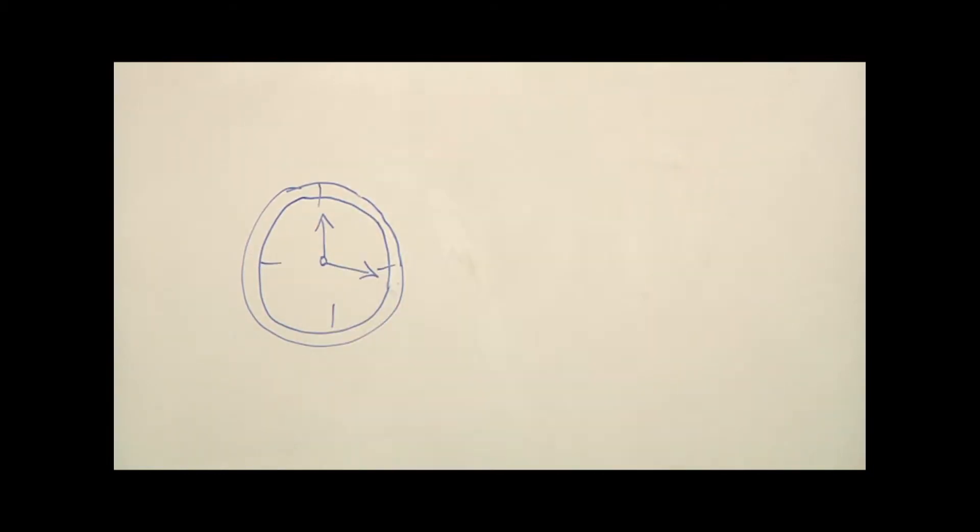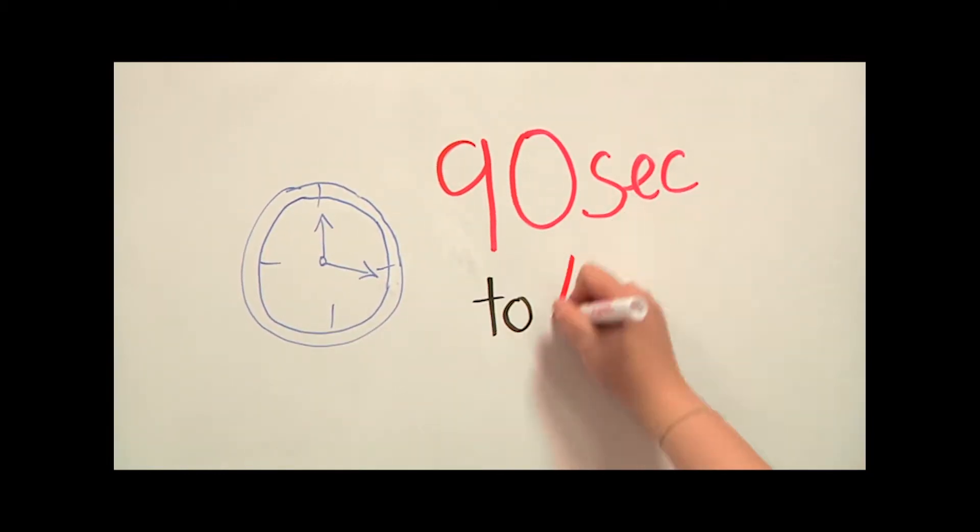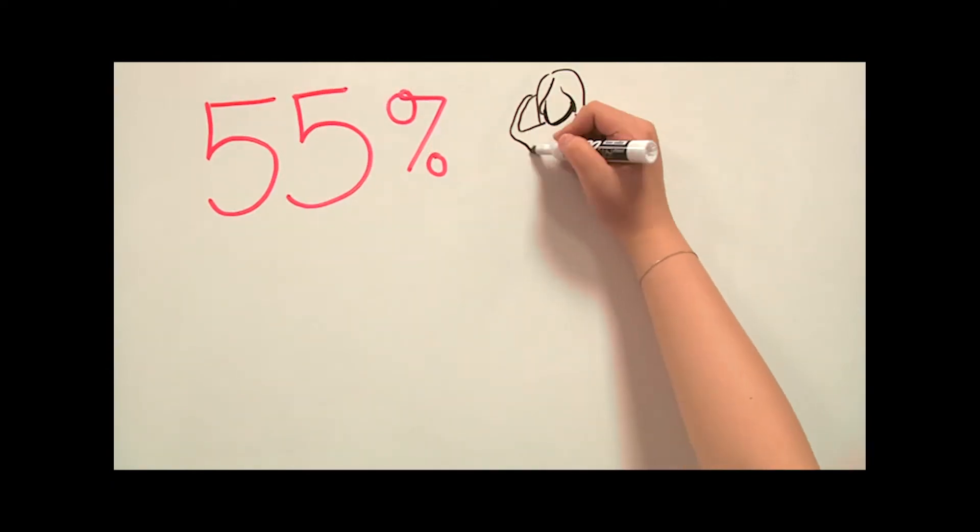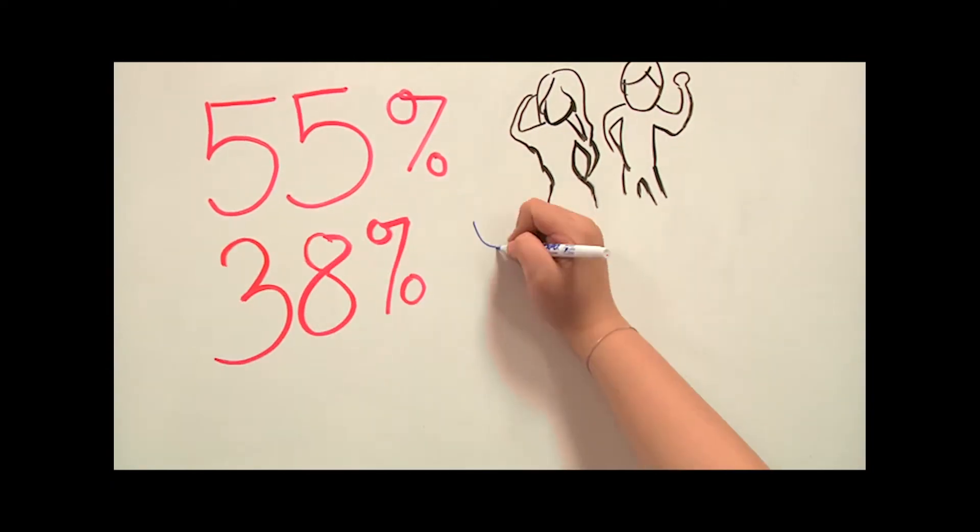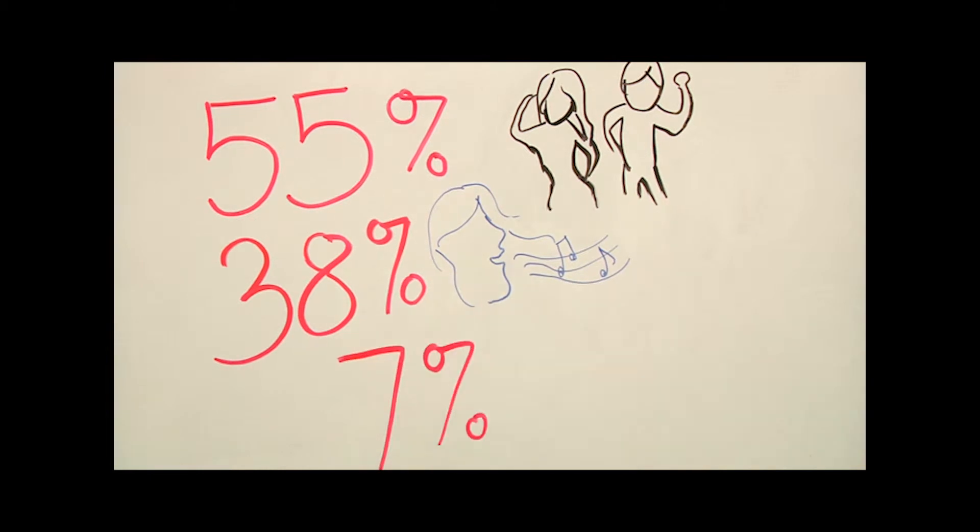It takes between 90 seconds and 4 minutes to decide if you fancy someone. 55% is through body language, 38% is the tone and speed of their voice. Only 7% is through what they say.